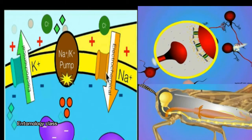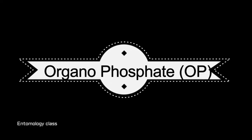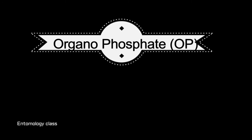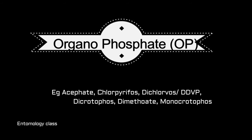Let us see the mode of action of different insecticide groups. Let's begin with the mode of action of organophosphates. Organophosphate group of insecticides are the most effective group of insecticides over the last 60 years. Widely used chemicals such as acephate, chlorpyrifos, dichlorvos, and monocrotophos are examples of organophosphates.